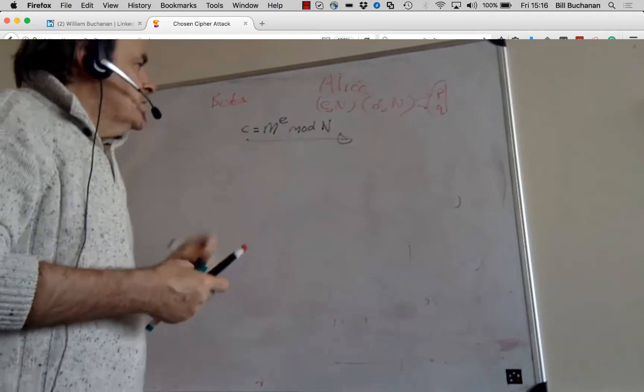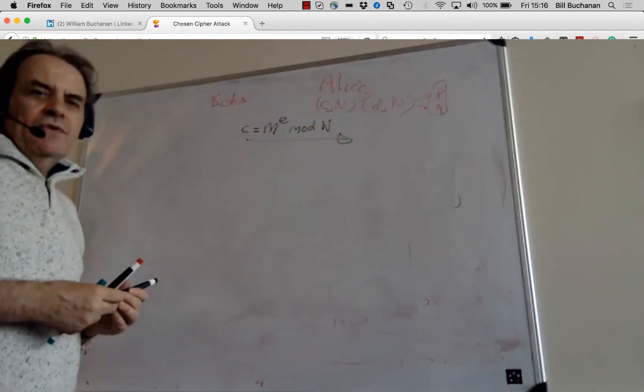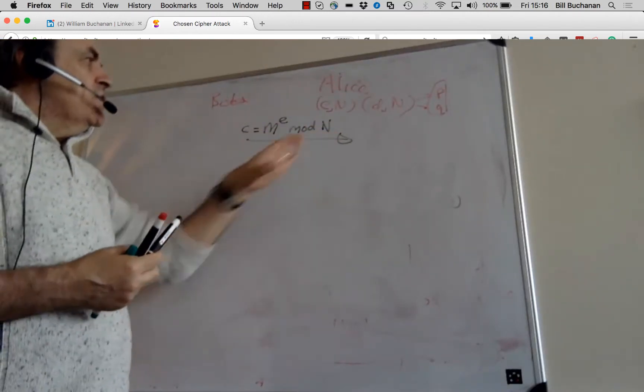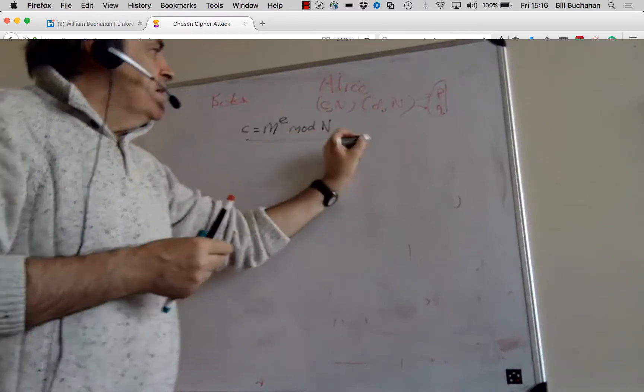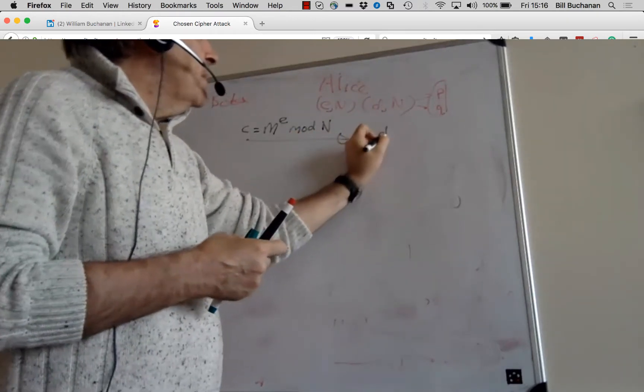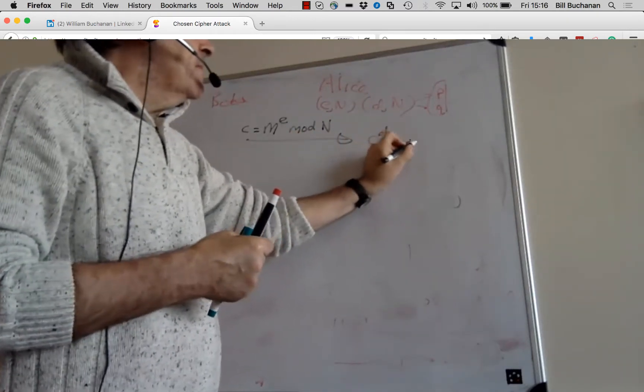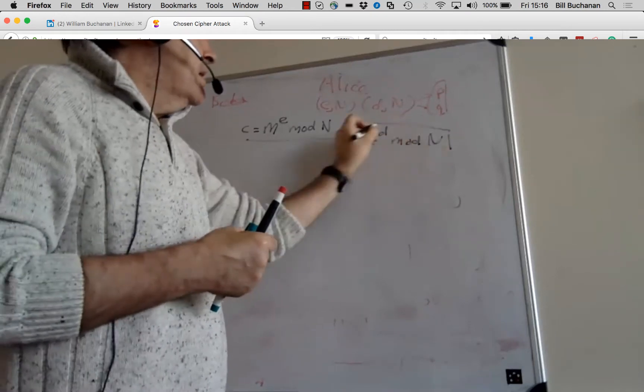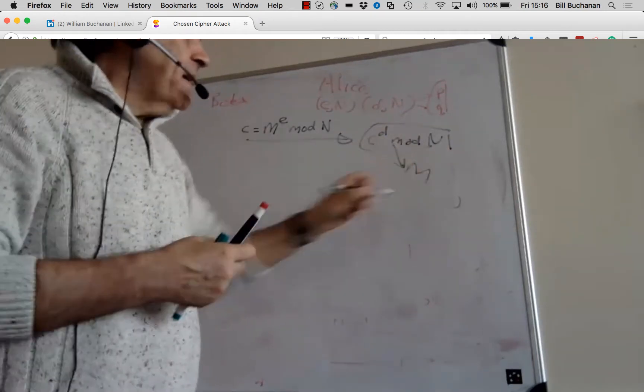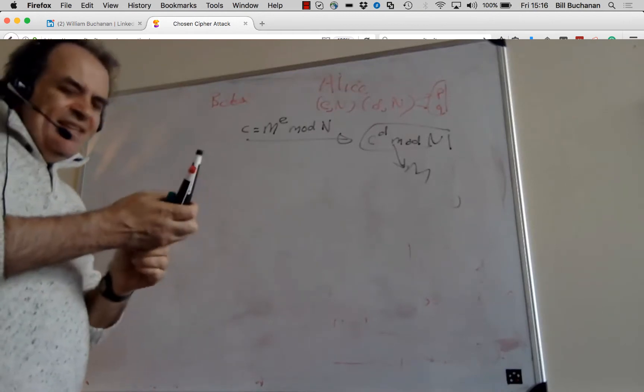Bob sends that cipher to Alice. She decrypts it with her private key and she gets the message back. So everything is fine there.